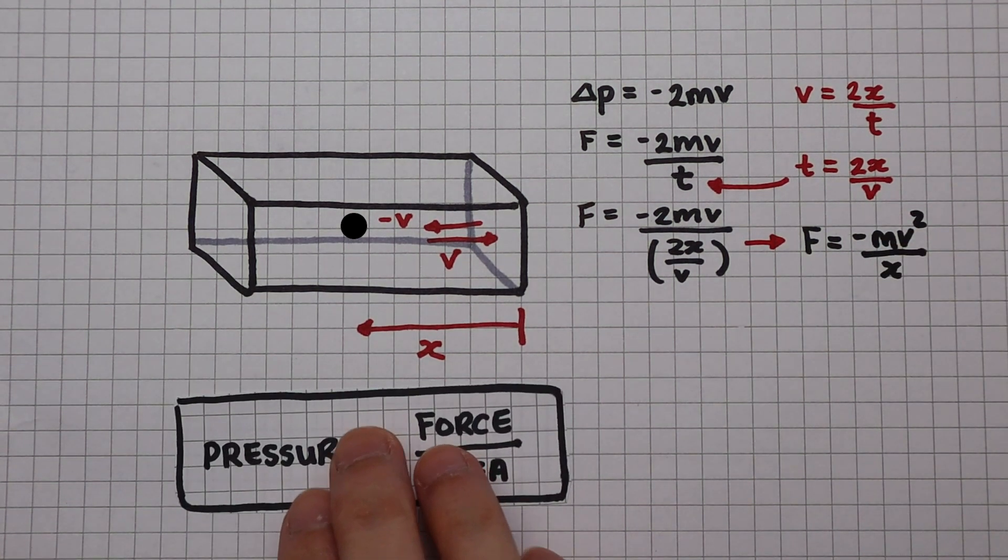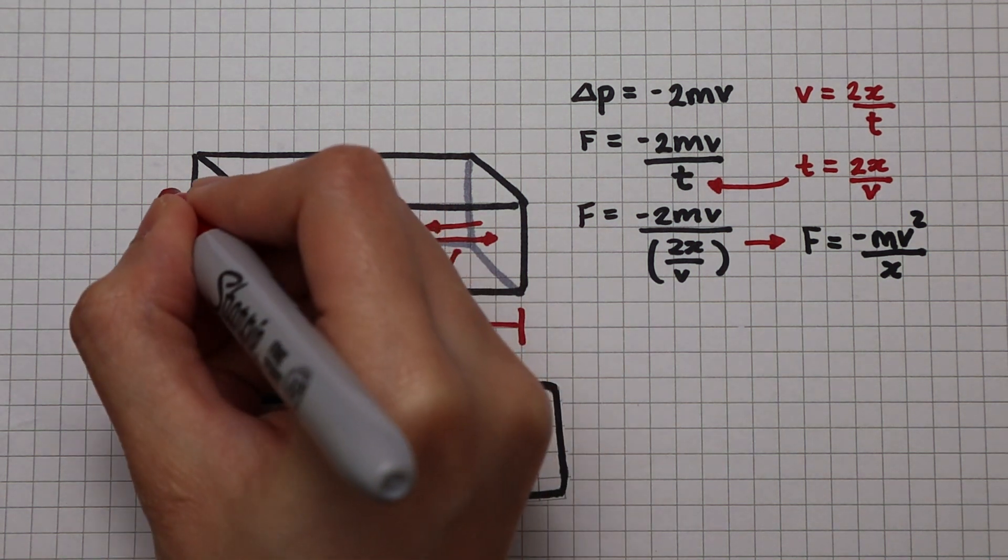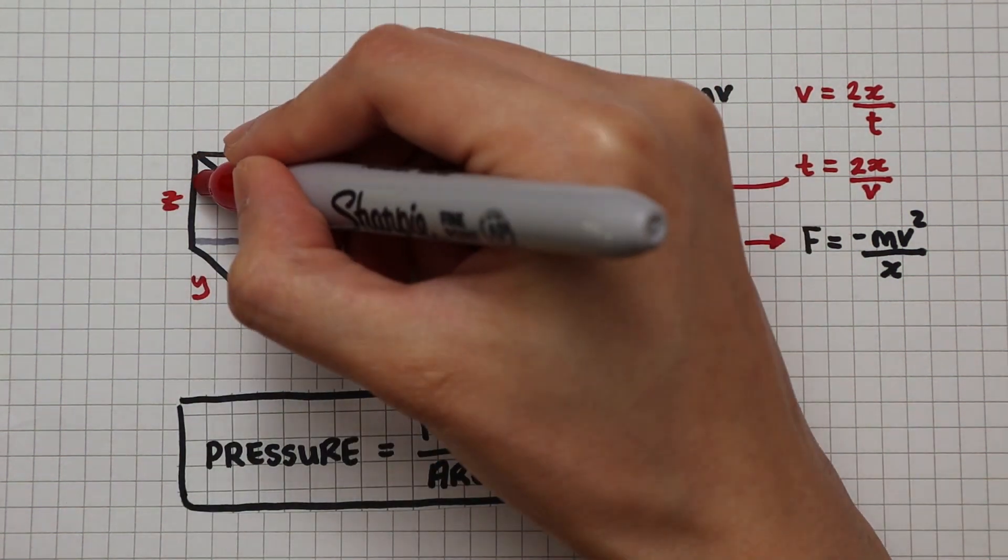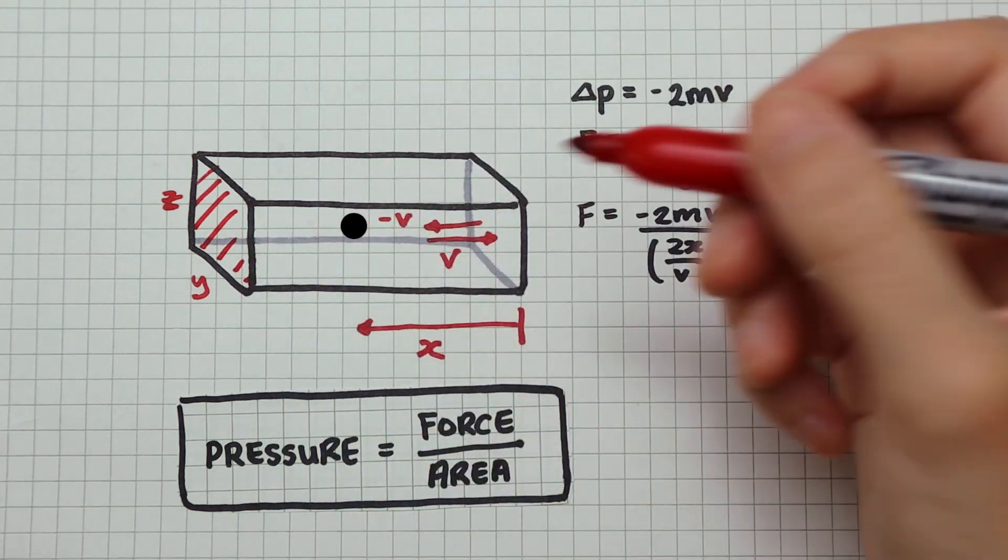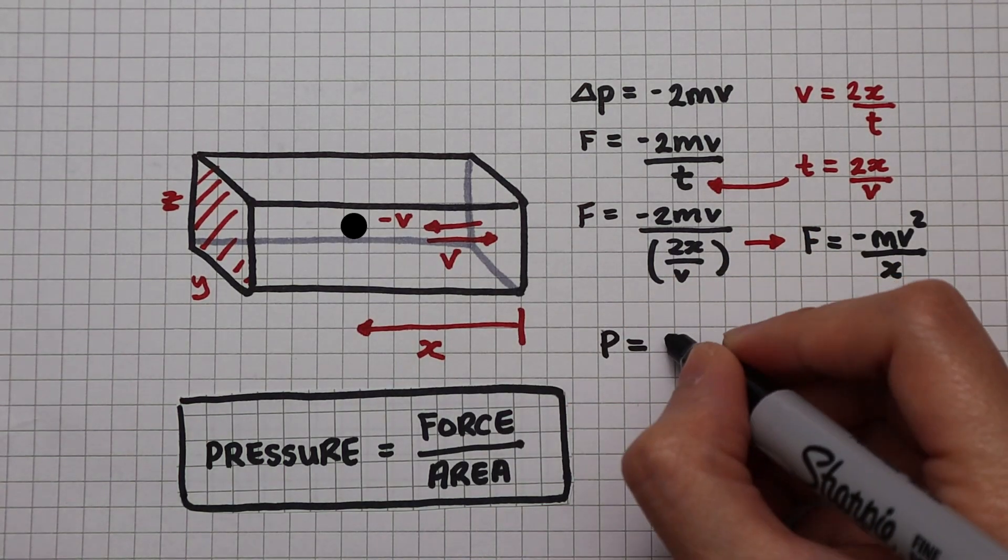Let's bring back the equation for pressure. Pressure is force over area. If I label the depth and heights y and z, the area of this wall is their product. So pressure is force divided by the area.